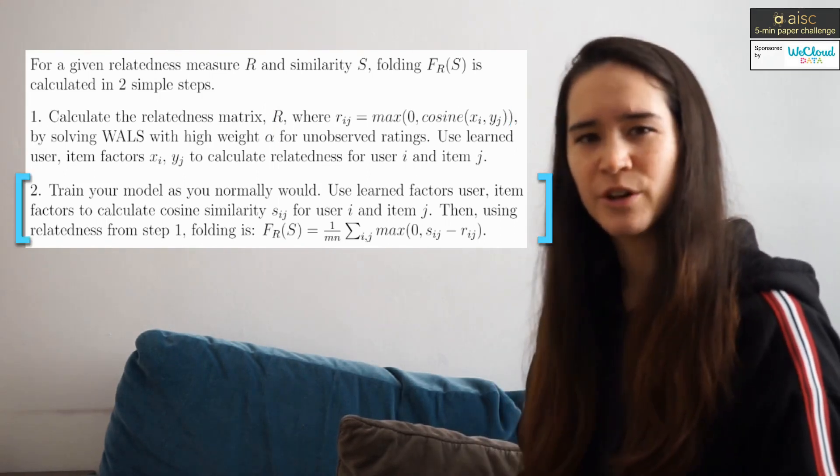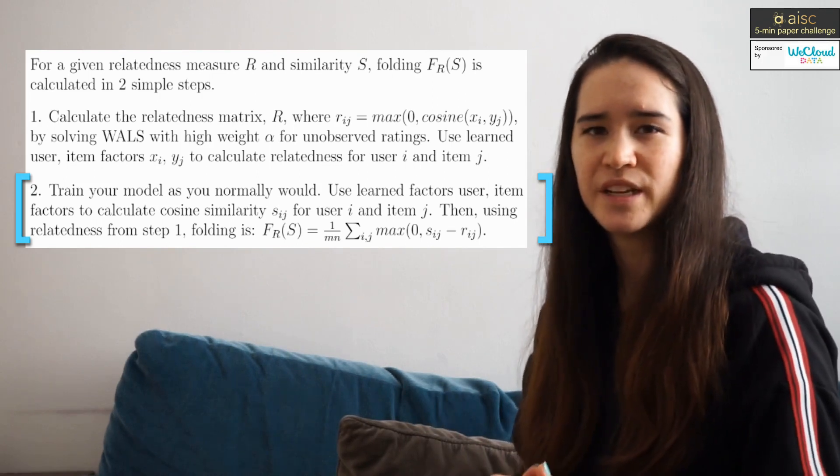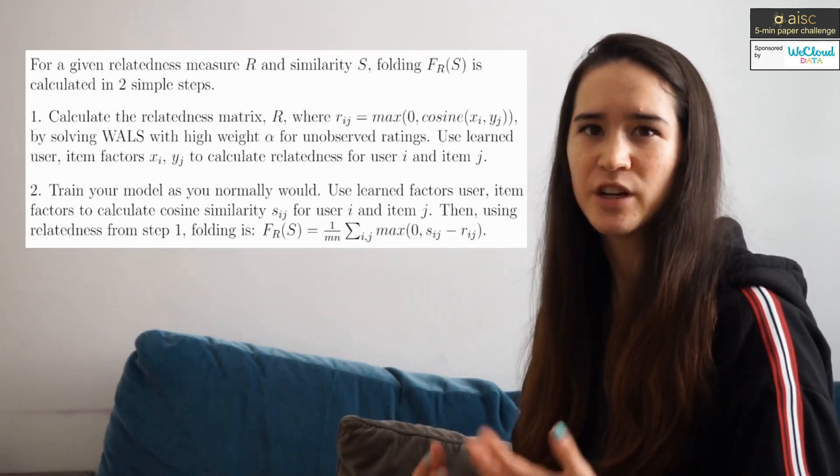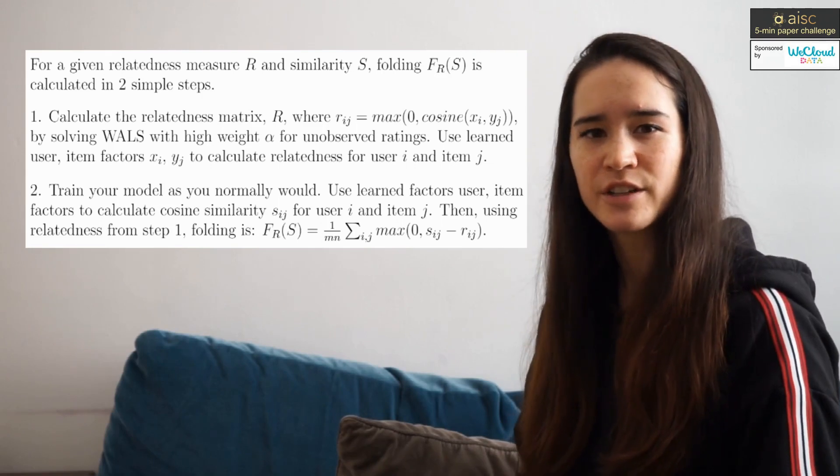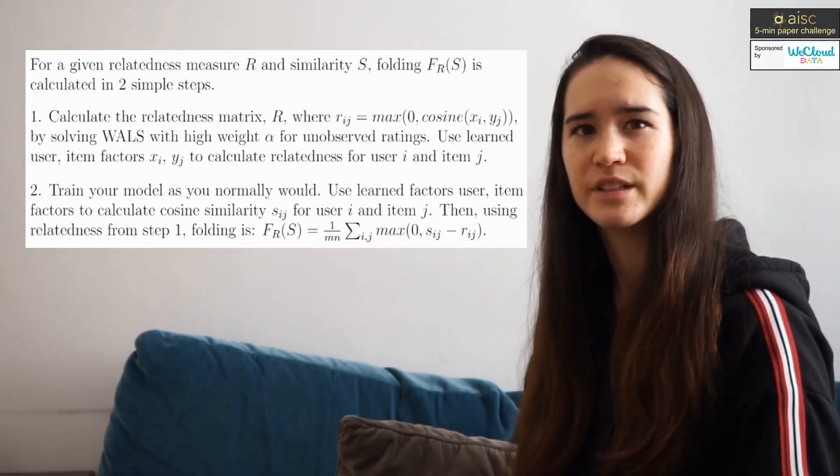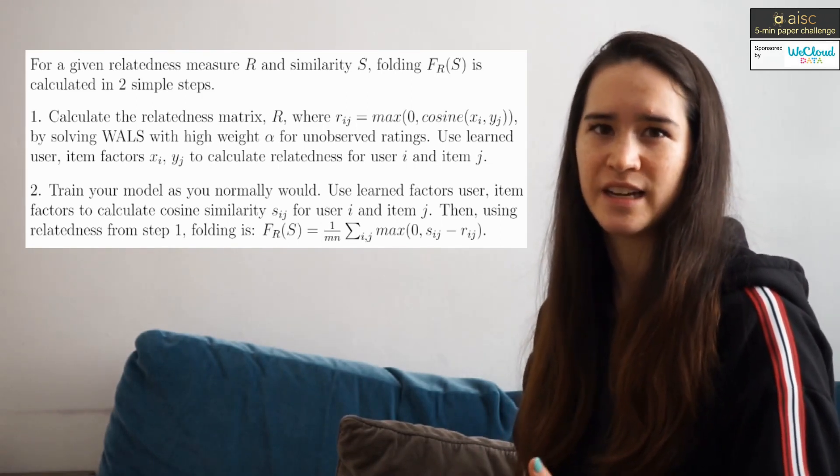The second step, we train our model and then we calculate folding for this trained model. So given a relatedness measure R, we take the max of zero and the difference between the cosine similarity and the relatedness of user i and item j.